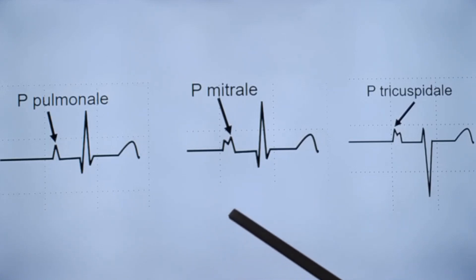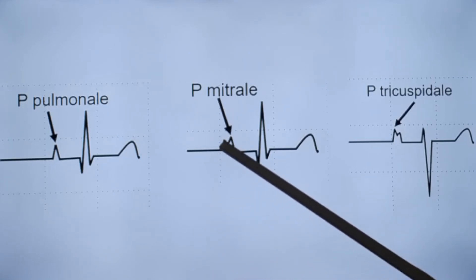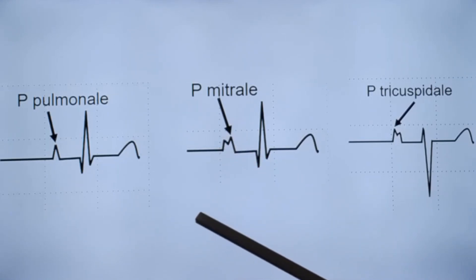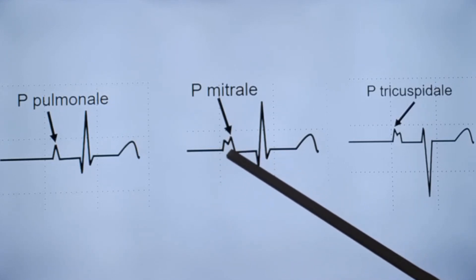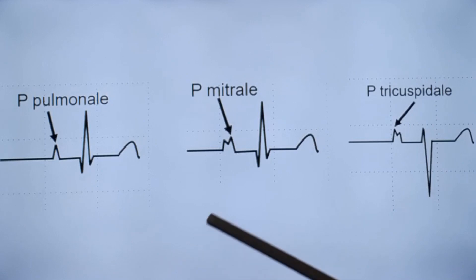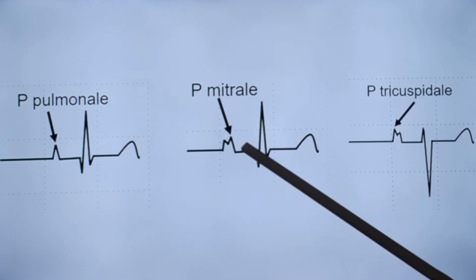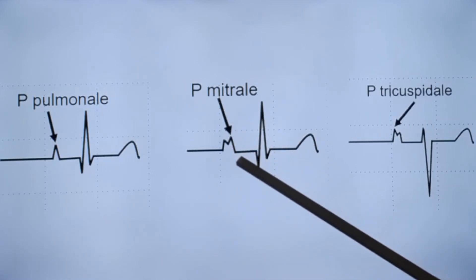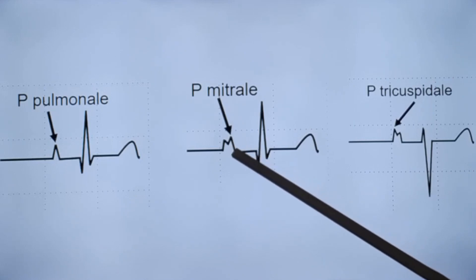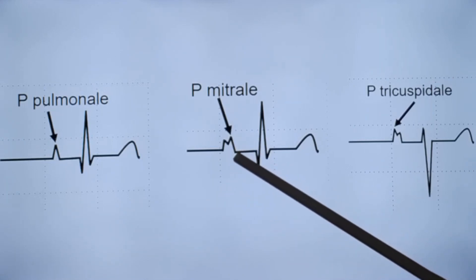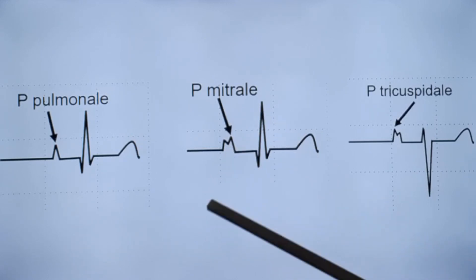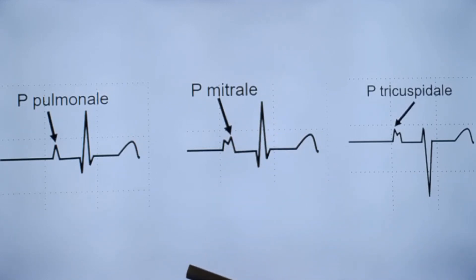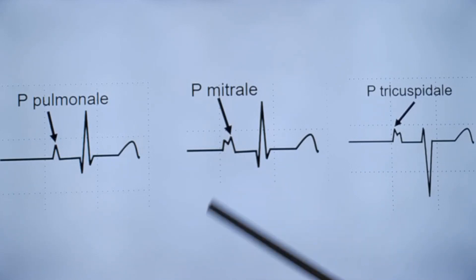In P mitral, the initial component of the P wave is due to right atrial activation and the second component is due to the left atrium. When the left atrium is enlarged, the second component becomes more prominent and the width is also increased, because there is more time required for activation of the enlarged left atrium.